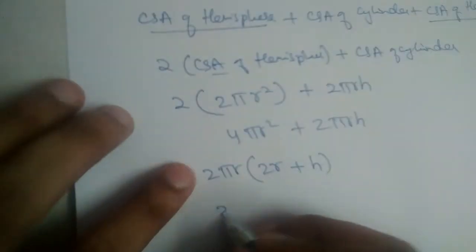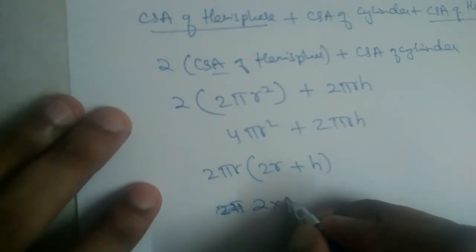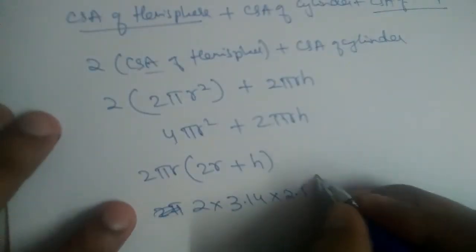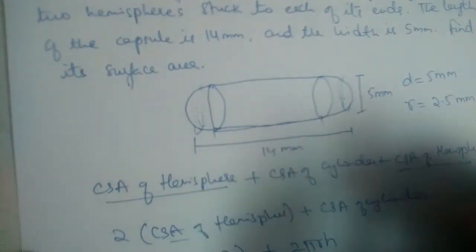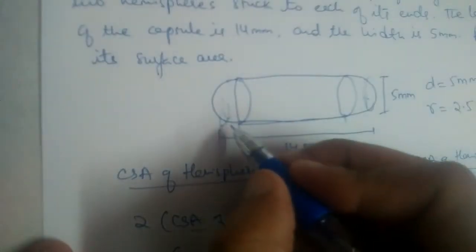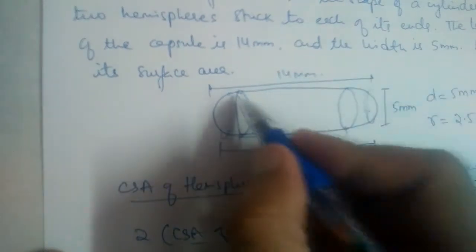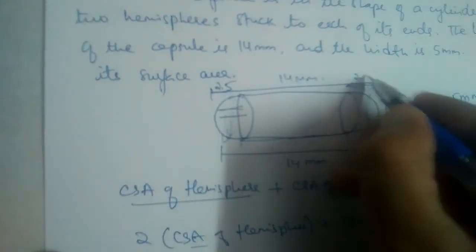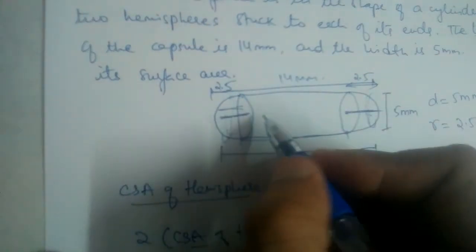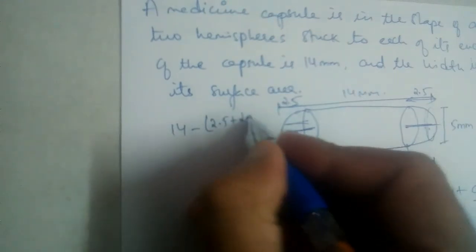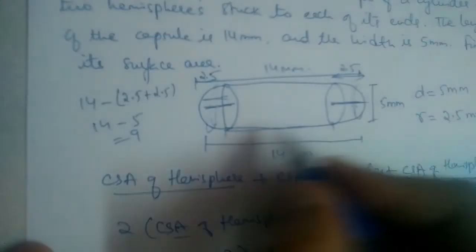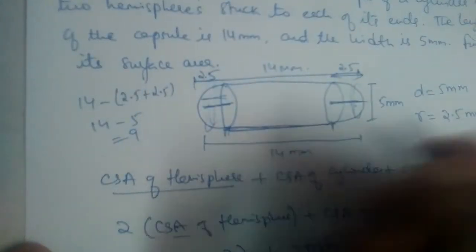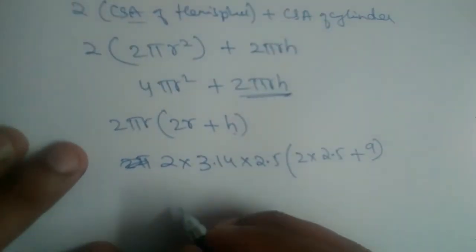Now substituting the values: the radius r is 2.5 mm. The height h is the height of the cylinder only. The total capsule length is 14 mm, and both hemisphere radii together are 2.5 + 2.5 = 5 mm, so h = 14 − 5 = 9 mm. So 2r + h = 5 + 9 = 14.